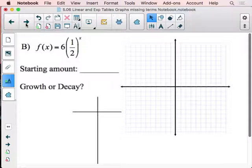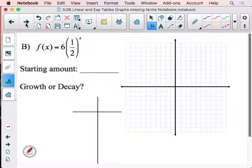If you'd like, you might want to pause and give it a shot, and then you can start the video and check your answers. So again, I know what the starting amount is: six. So I can plot the point (0,6). I can put that on my table. I know that this is going to be x and f(x), and I know in the middle here I'm going to have the point (0,6).